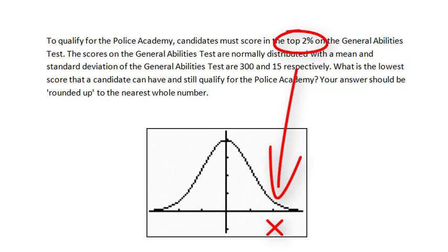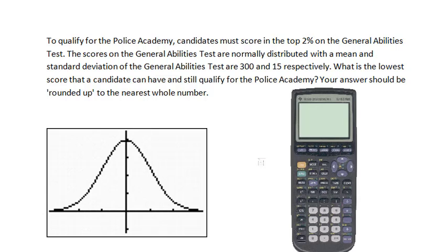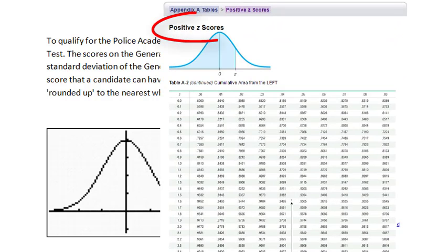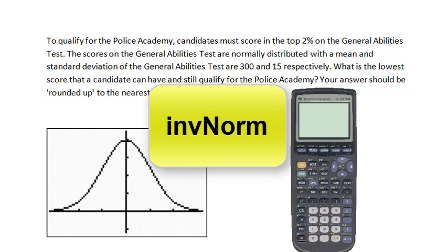Once a decision has been made as to whether the area or percent is to the left or to the right of the number we are trying to find, then we are ready to get started solving the problem. In a conventional statistics course, this problem would now be solved using the z-score tables. However, in this course, we will be using the TI-83 or 84 graphing calculator. The inverse normal function is what we will use to solve percentile problems.